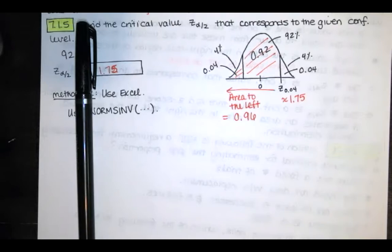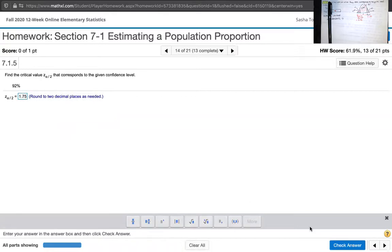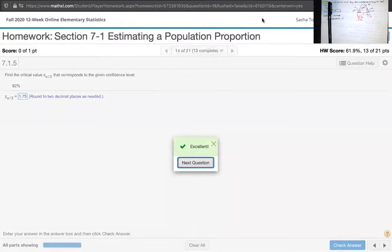So let's go back to the homework. And enter 1.75. We're asked to round to two decimal places. And they like it. That's great.